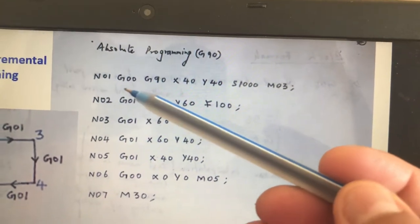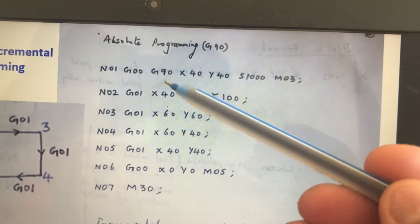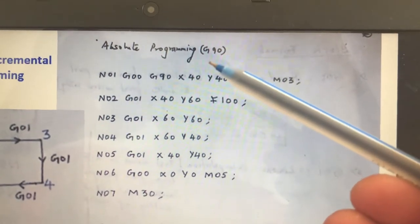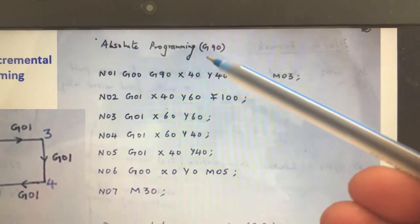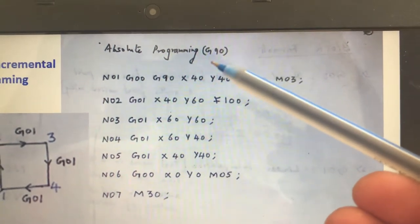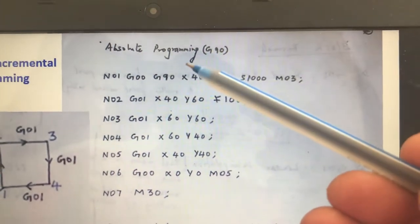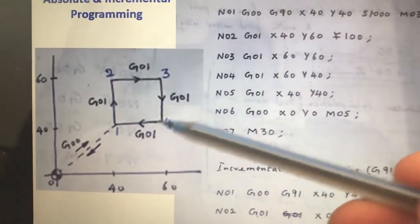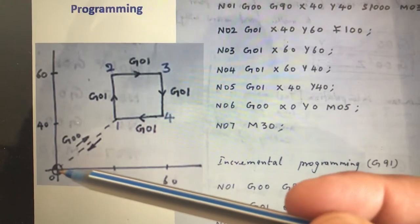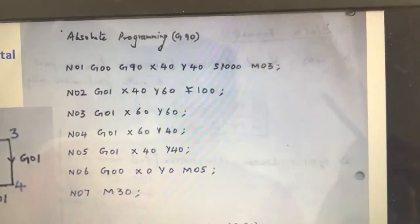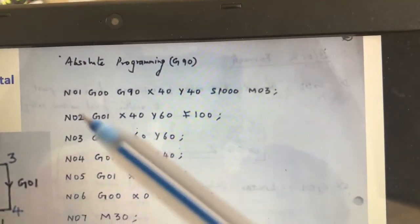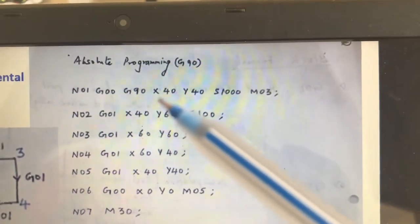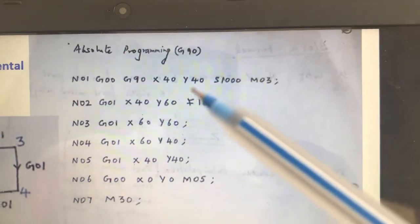Next is G00, which means it is not cutting, and we say this is G90. G90 means absolute programming. Absolute programming means all the distances of 1, 2, 3, 4 is measured only from fixed origin 00. So this N01, G00, G90 and X40, Y40.